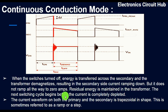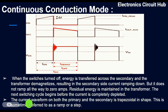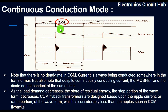The next switching cycle begins before the current is completely depleted. You can see this is the demagnetized period, highlighted in red, and during this time the transformer secondary current ramps down but doesn't ramp down to zero amps — because the transformer maintains some residual energy to start the next switching cycle. The current waveform on both primary and secondary is trapezoidal in shape, sometimes referred to as a ramp or step.